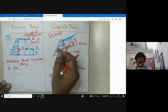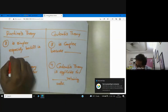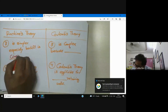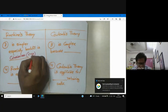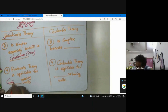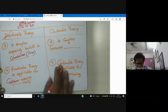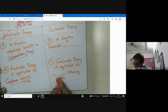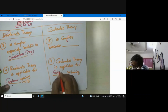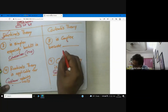For cohesionless backfill, especially in c=0 condition, Rankine's theory is applicable for cantilever retaining walls. Coulomb's theory is applicable for solid gravity retaining walls, because they are very bulky.